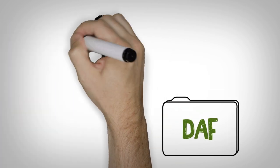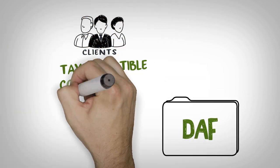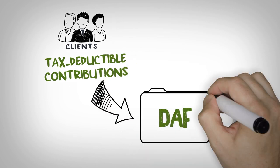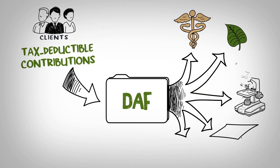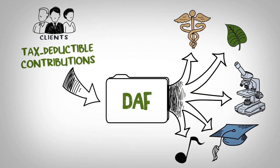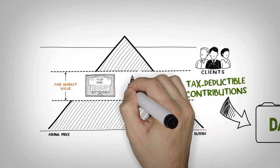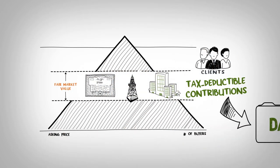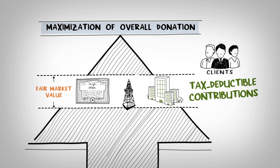A DAF is a charitable vehicle that allows individuals to make tax-deductible contributions to a dedicated account from which they may then recommend grants to other charities. Contributing these assets to a donor-advised fund allows for a fair market value tax deduction and can maximize the amount donated to charity.